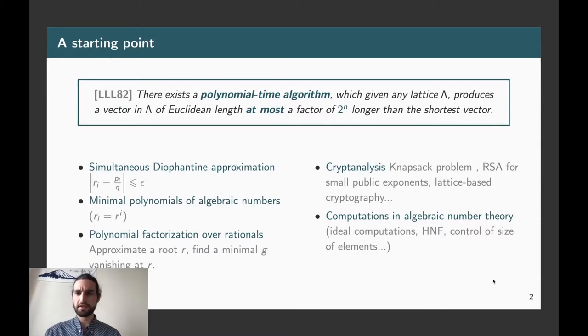It allows to solve knapsack problems in some specific settings. It allows to solve RSA for small public exponents. And of course, it allows to break and estimate the security of all the lattice-based schemes. But more importantly for what is going to follow, it is also very useful in computational number theory. In particular, it is a basic building block of ideal computation algorithm or for the HNF computation algorithm over modules. And it is used everywhere in algebraic number theory to control the size of the elements appearing inside other more sophisticated algorithms.